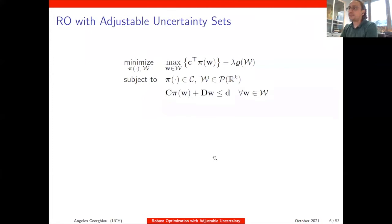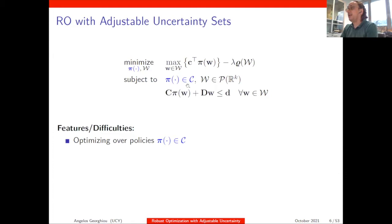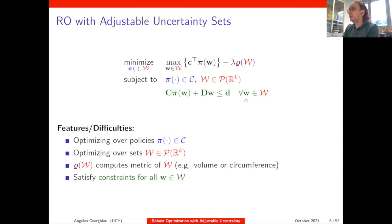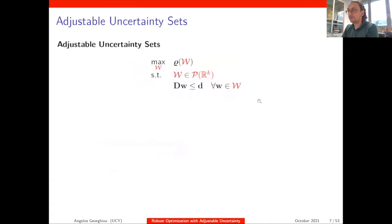This is a multi-stage robust optimization problem, where the multi-stage behavior is hidden within the policy. The difficulty comes — as with any multi-stage robust optimization problem — from needing to optimize over policies, and now also over the uncertainty sets W. In the objective, rho measures a metric of the set — you can think of it as calculating the volume. Lambda is the money you get per unit of volume sold. All constraints must be satisfied robustly for all realizations within W.